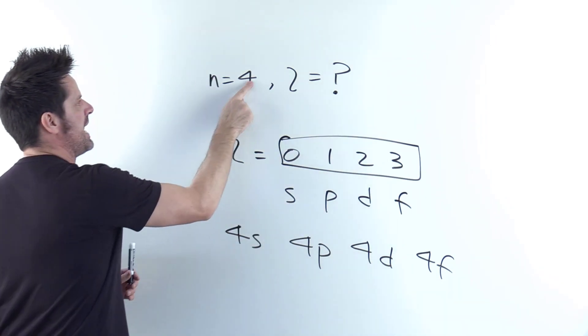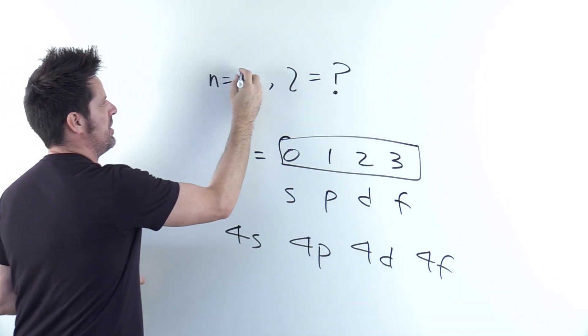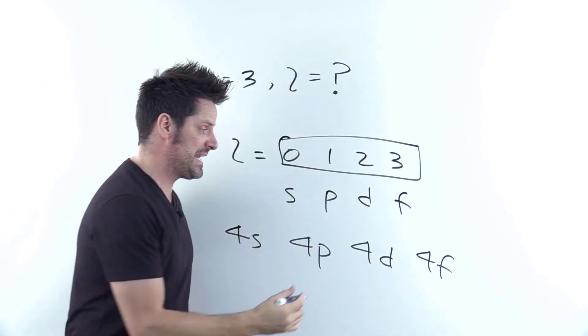Now, out of curiosity, what if we changed n's number here to 3? Then what? Well, let me ask, is there such a thing as a 3f?